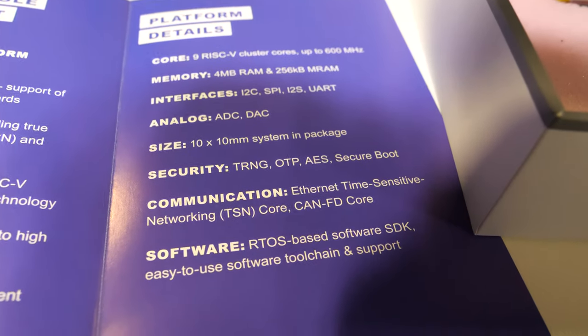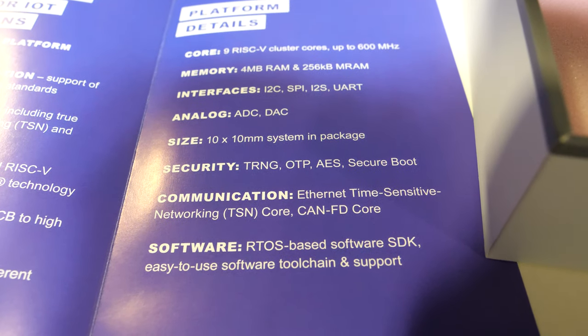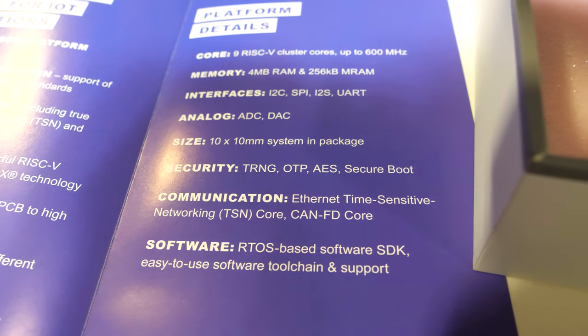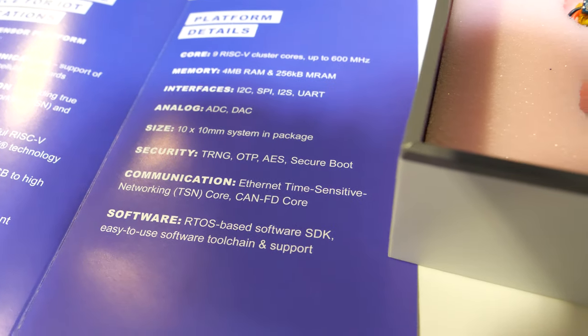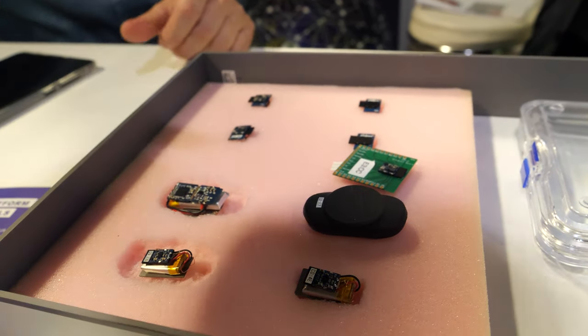And it says Ethernet time sensitive networking and CAN FD. It sounds like something for the cars or no? It's for industrial applications more. In that case these both connectivities, CAN flexible data rate is often used in industrial area and also Ethernet time sensitive networking is quite a new standard which is completely implemented in the device as an IP core. But here you have a different kind of modules, some Bluetooth.